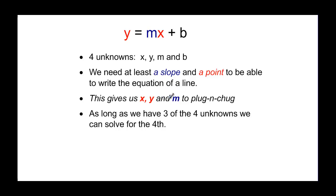Having a slope and a point gives us an x, a y, and an m to plug in, which means we just have b as an unknown. As long as we have three of the unknowns, then we can solve for the fourth one, because we know how to solve one-variable equations.